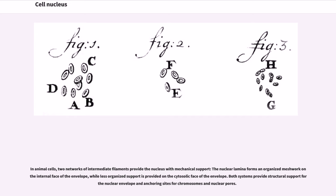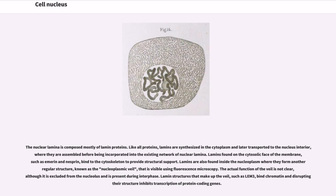In animal cells, two networks of intermediate filaments provide the nucleus with mechanical support. The nuclear lamina forms an organized meshwork on the internal face of the envelope, while less organized support is provided on the cytosolic face of the envelope. Both systems provide structural support for the nuclear envelope and anchoring sites for chromosomes and nuclear pores. The nuclear lamina is composed mostly of lamin proteins. Like all proteins, lamins are synthesized in the cytoplasm and later transported to the nucleus interior, where they are assembled before being incorporated into the existing network of nuclear lamina. Lamins found on the cytosolic face of the membrane, such as emerin and nesprin, bind to the cytoskeleton to provide structural support. Lamins are also found inside the nucleoplasm where they form another regular structure, known as the nucleoplasmic veil, that is visible using fluorescence microscopy. The actual function of the veil is not clear, although it is excluded from the nucleolus and is present during interphase.